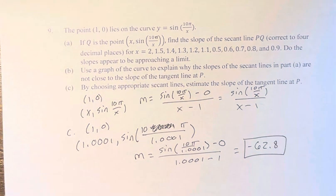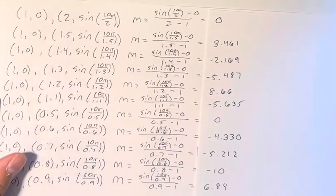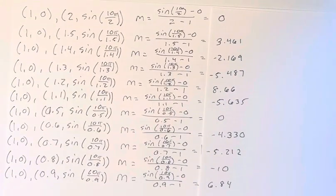So our final answer is negative 62.8. Just again, we can leave you on this page with all of the values that you need for part A.